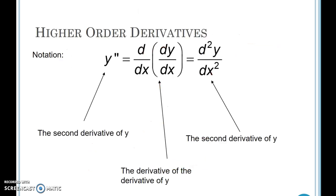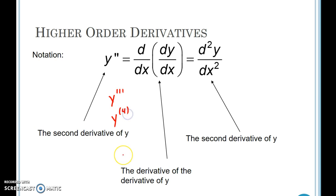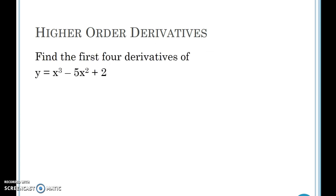For higher order derivatives, Newton's notation just adds more tick marks, and Leibniz's notation uses those symbols that look like exponents but really mean take the second derivative. If Newton kept taking derivatives past four, it starts looking messy, so he would put the number of derivatives in parentheses. Leibniz keeps using those exponent-like symbols to indicate higher order derivatives. I'm going to stop there, partly because I'm only allowed a 15-minute video on YouTube.